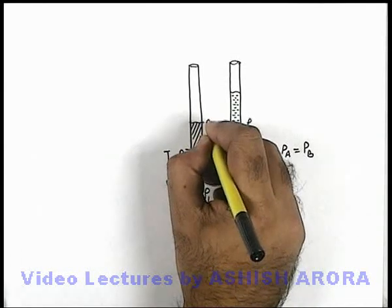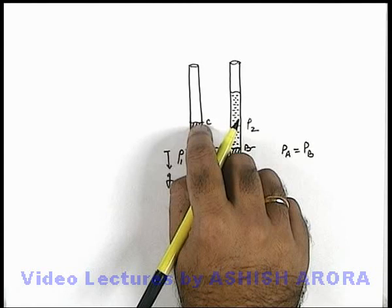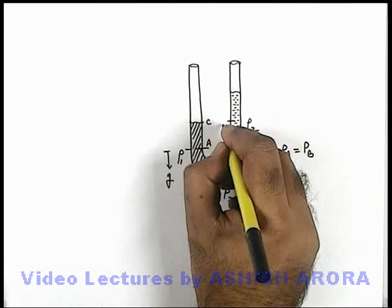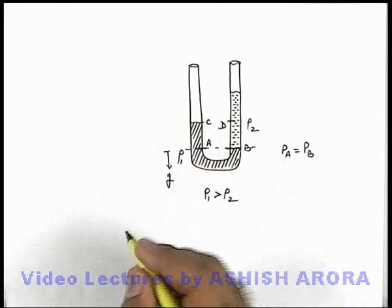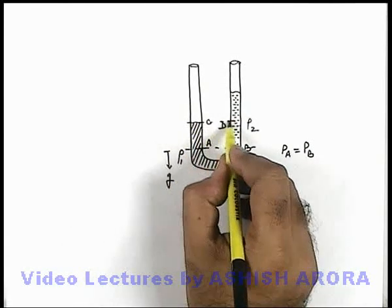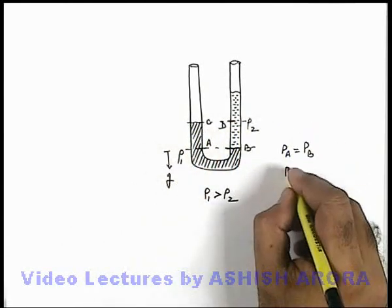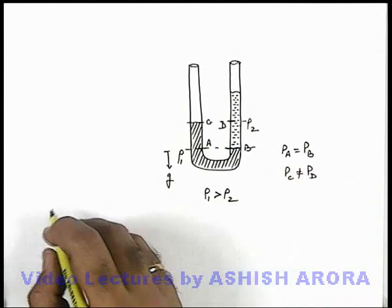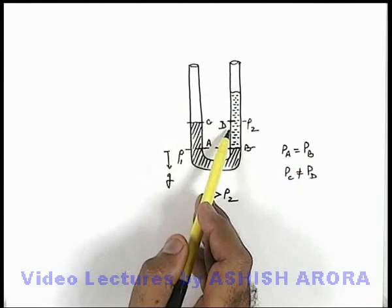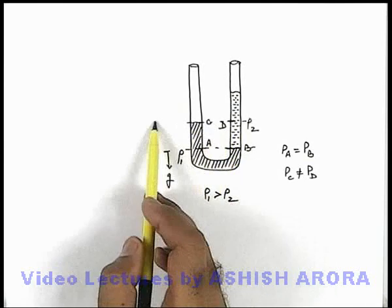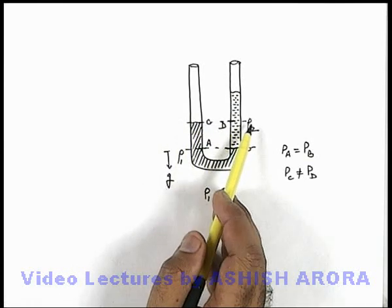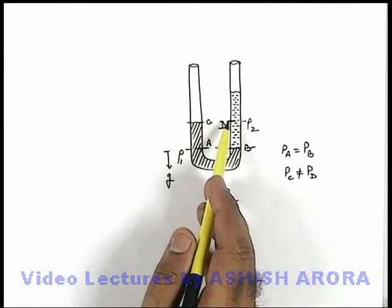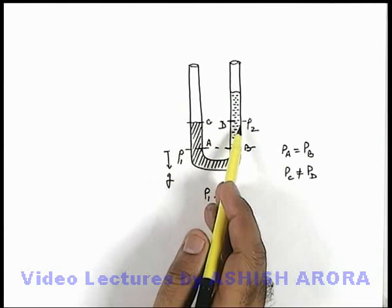But if we consider a point c which is at the top of this liquid, and at the same level we consider a point d in the other liquid, although these are also at the same level, but still we can state that P_c is not equal to P_d, as the two liquids are different. And the points are lying on the same horizontal surface which is normal to g. Still this is not applicable because the two liquids are different.